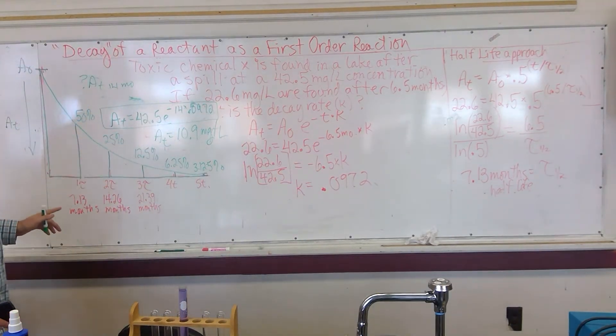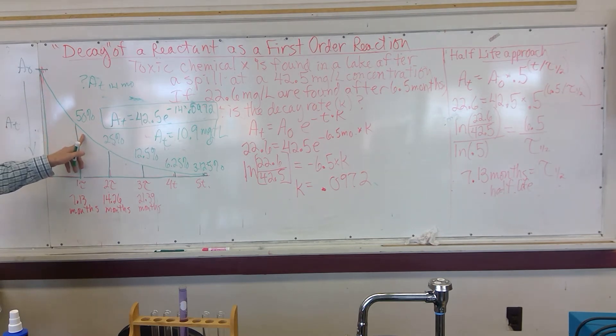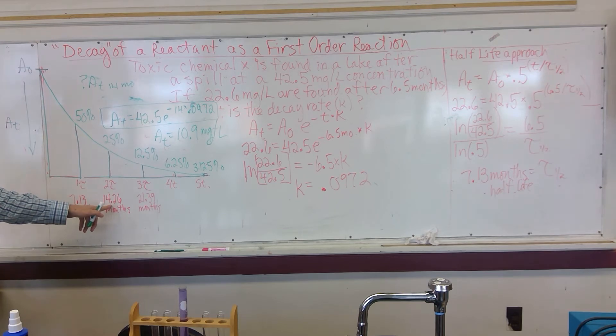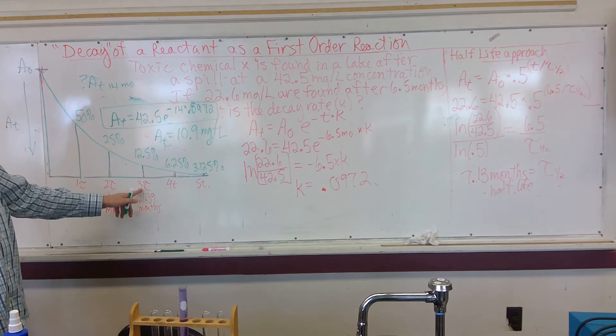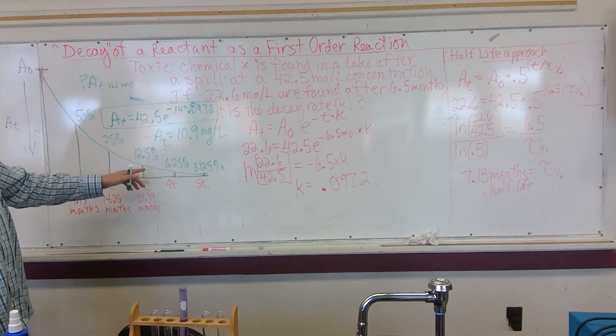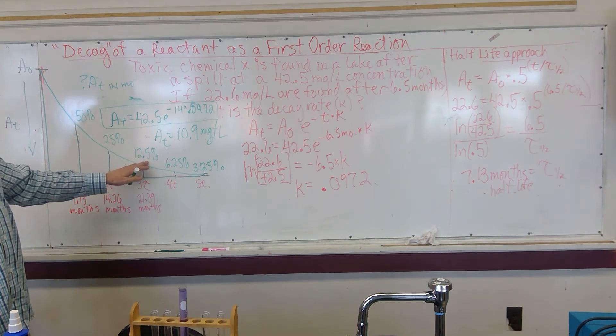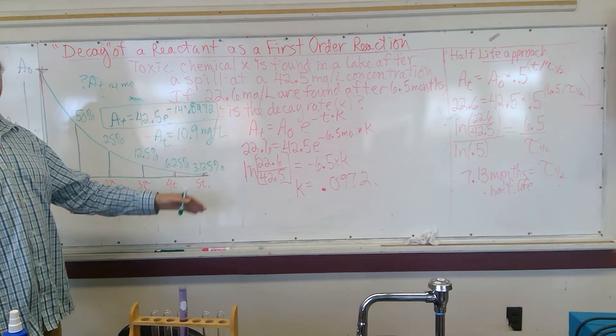So this is saying that after 7.13 months, we'll have half of this nasty stuff left. And then after 7.13 months, which would be 14.26 months, we'd be down to 25%. Then after 3 half-lives, which would be 21.39 months, we'd be down to 12.5% and so forth.